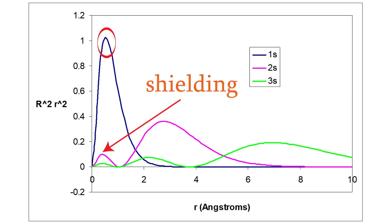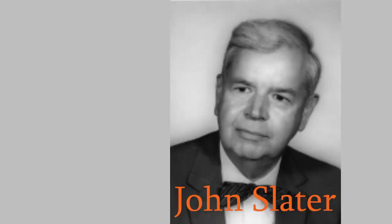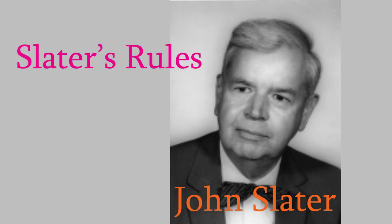So how do we determine the effective nuclear charge really experienced by an electron? Fortunately, there's a great way to estimate it. It was developed by John Slater, who we first met in video 20. Slater came up with a series of steps we can use to find the effective nuclear charge. They're known as Slater's rules.